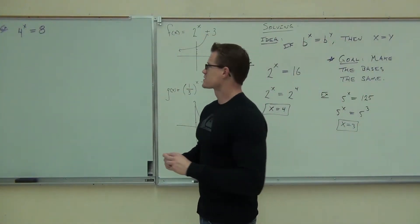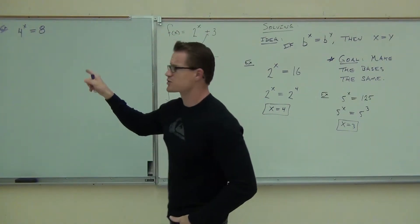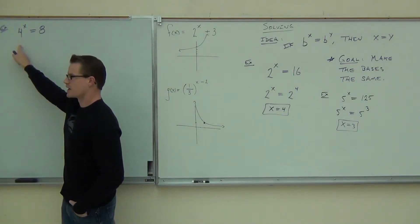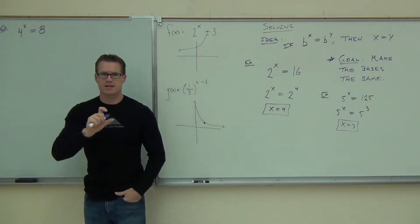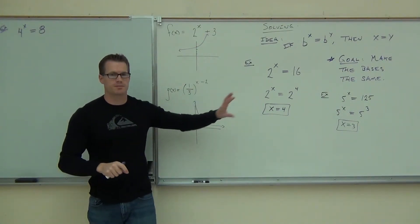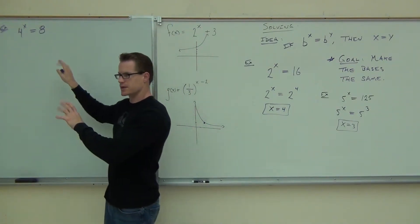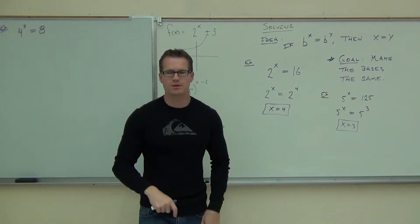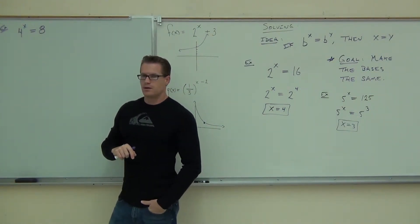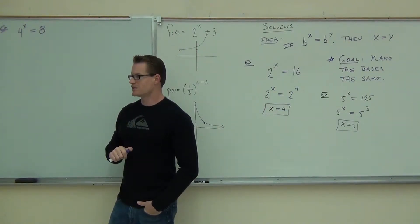4 to the x equals 8. Okay. Well, it's definitely exponential because our variable is in the exponent spot. What's our base over here? 4. Okay. Your goal is to try to make your bases the same, right? Now watch carefully. If you get that, great. But that's not the only thing we're doing today. So you've still got to be focused on this next stuff here. There's some other manipulation we can do. Can you write this as 4 to some power? Don't you give me 4 squared because 4 squared is 16, right? You can't do that.